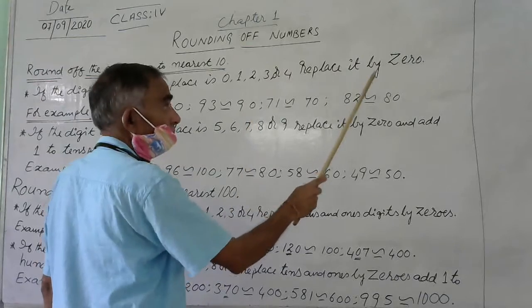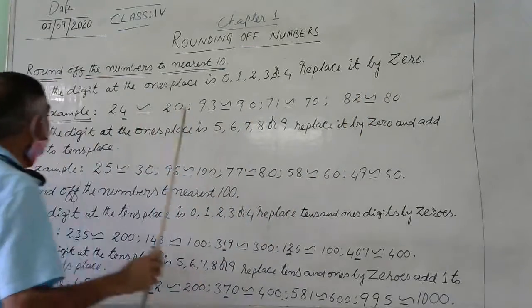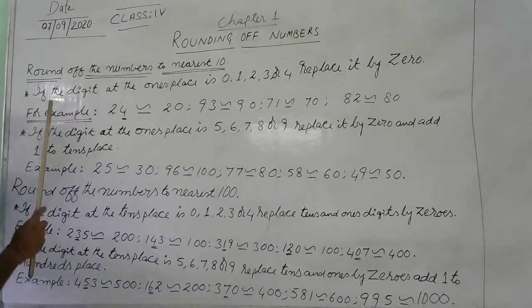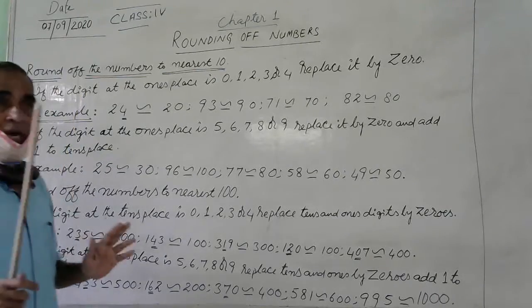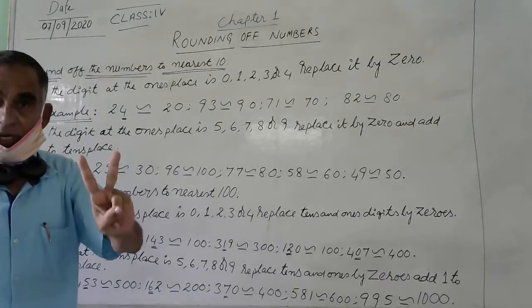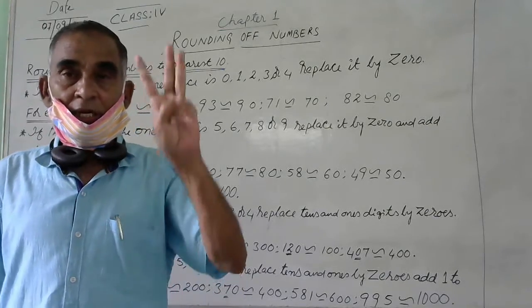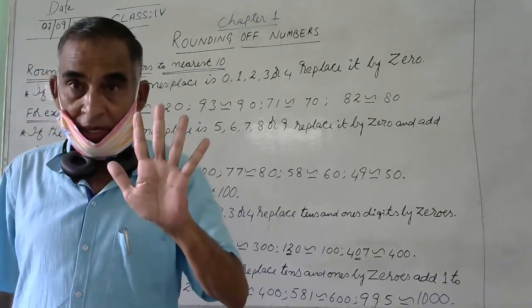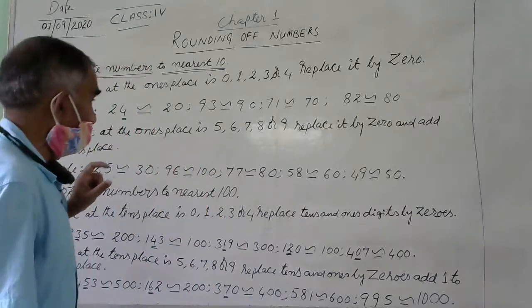One place digit. Then you see that when you round the number to nearest 10th, it may be 2 digit number, it may be 3 digit, it may be 4 digit, it may be 5 digit, whatever the number is.